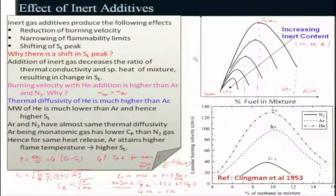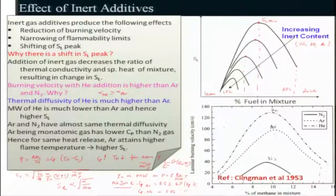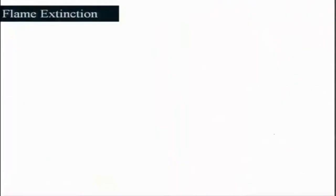This is the argument I am trying to make. Therefore argon attains a higher flame temperature compared to nitrogen, and therefore the burning velocity with argon will be much higher. This argument can be used to explain the experimental observations, and this is the effect of inert additives — depending on that, you can utilize it for your specific application.